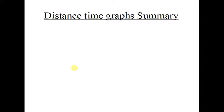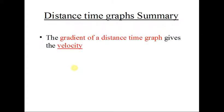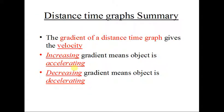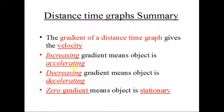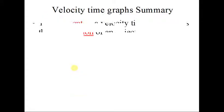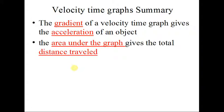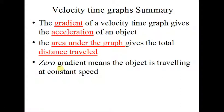So to recap what I've said up to this point. On a distance time graph, the gradient gives you velocity. The unit obviously is meters per second. Increasing gradient means the object is accelerating. Decreasing gradient means the object is decelerating. To accelerate is to speed up. To decelerate is to slow down. Zero gradient means the object is stationary. So when the line is horizontal, it means the object is stationary. It's not moving. On a velocity time graph, the gradient gives you the acceleration. Area under the graph gives you the total distance traveled. Zero gradient means the object is traveling at constant speed, which is a key difference between the DT graphs and the VT graphs.